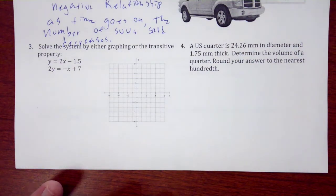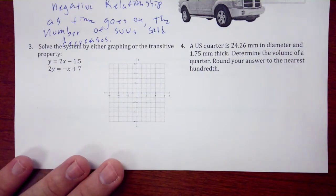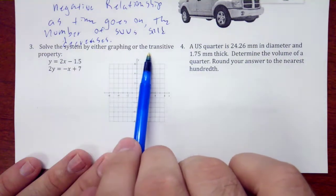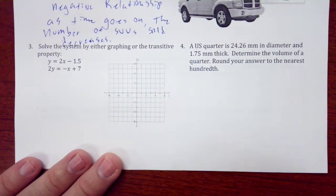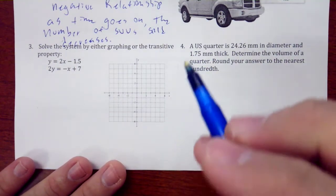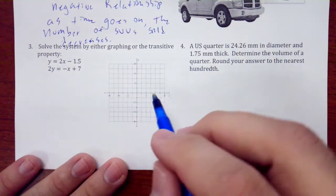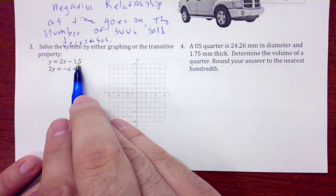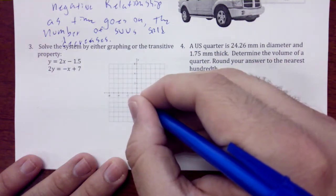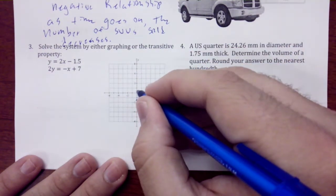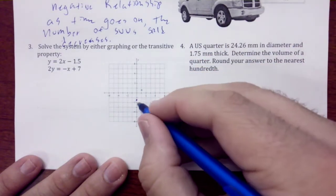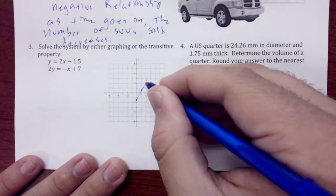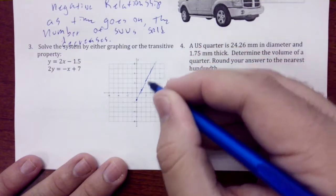Let's go ahead. Solve the system by either graphing or the transitive property. We're going to do both. I have the equation y = 2x - 1.5, so we go to -1.5 and then we're going to go up 2 over 1. This is kind of our graph here, up 2 over 1, something like this.